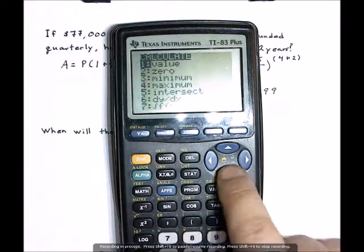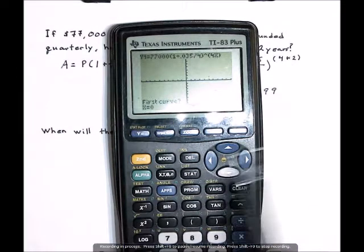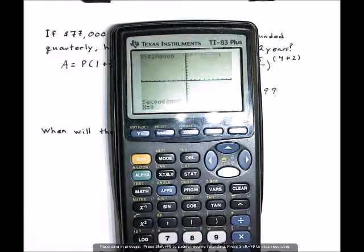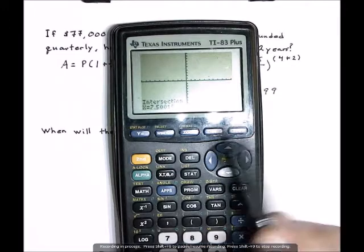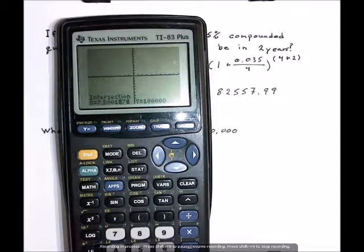Hit 2nd Calc, down to intersect. And it's going to ask you for a first curve, second curve, and a guess. Just hit enter through those and it will work away, and tell you that the intersection occurs at 7.5, which in this case stands for about 7.5 years.